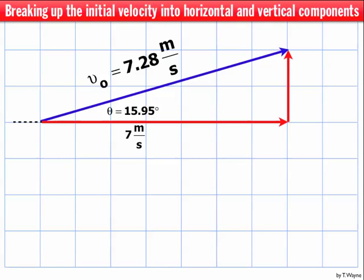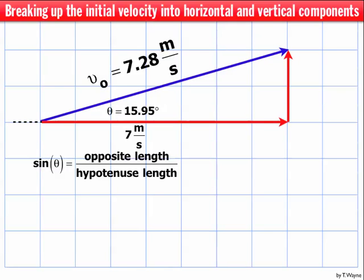I'll use trig again to find its length. In this case, that's the opposite side to the angle. So what I'm going to do is use the sine function. Sine theta is equal to the opposite side length divided by the hypotenuse side length. So the opposite length is going to be sine theta times the hypotenuse length.